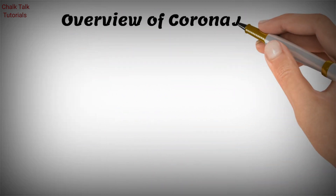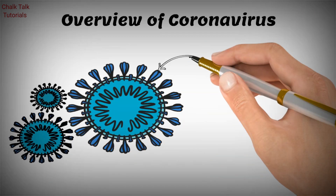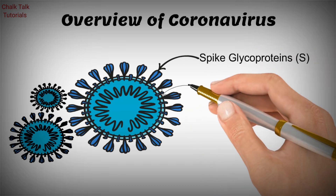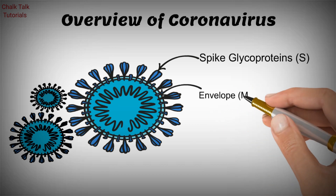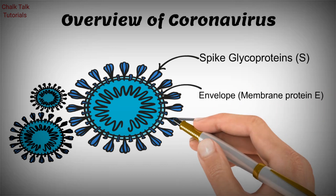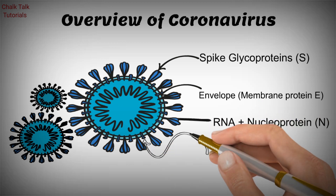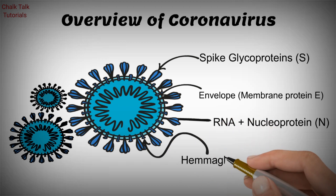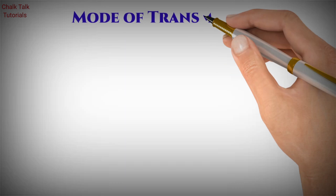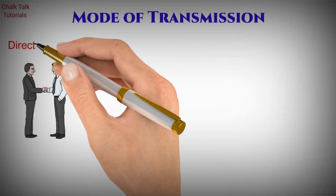Overview of coronavirus: Coronavirus is a circular structure, and in its membrane there are spike-like structures embedded which are made up of glycoproteins, denoted by S. The membrane is made up of another kind of protein denoted by membrane protein E. In the center there is a spring-like structure which is its genome RNA or nucleoprotein. In the membrane there are also some other things embedded which are known as hemagglutinin.